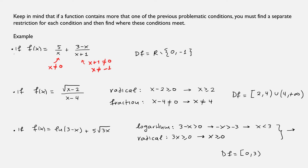Keep in mind that if a function contains more than one problematic condition, you must find a separate restriction for each and then find where these conditions intersect. For example, if f(x) = 5/(x + 3) − x/(x + 1), from the first fraction x ≠ 0, from the second x ≠ −1, so the domain is all real numbers except 0 and −1.